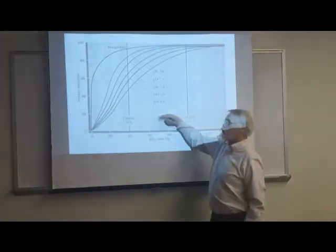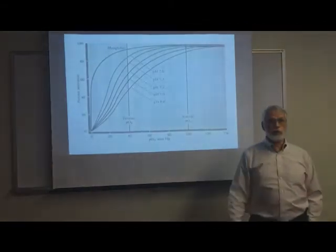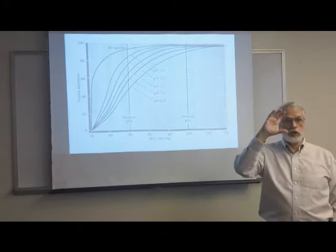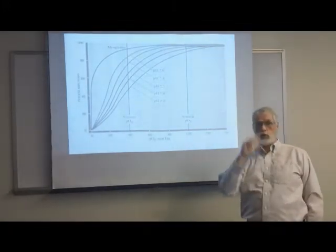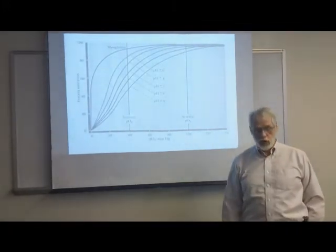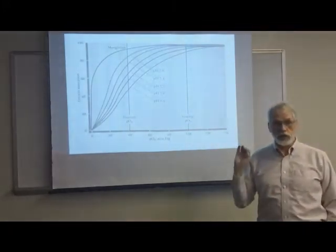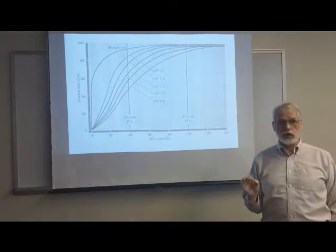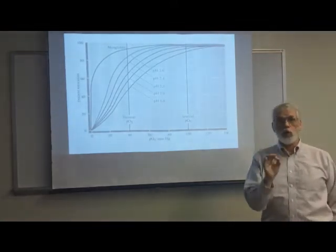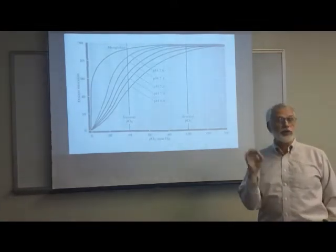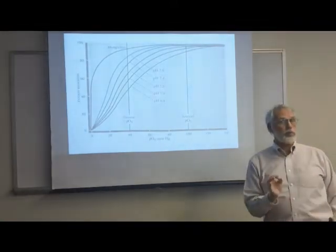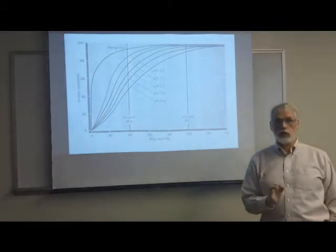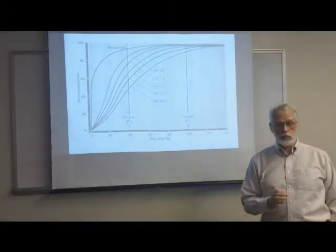If the pH went down to 5, it probably would be fatal. You have a very narrow range over which you're allowed to have pH. So that's the Bohr effect — the effect of pH. The Bohr effect does not require any particular source of those protons; anything can do.